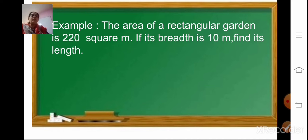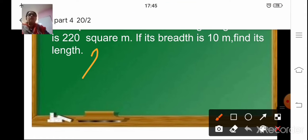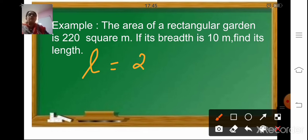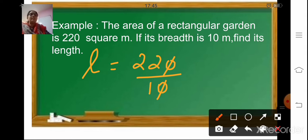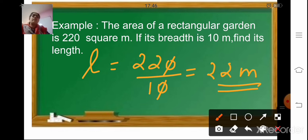Coming to the next example: the area of a rectangular garden is 220 square meter; if its breadth is 10 meter, find its length. Here breadth is given and area is given, so we have to find the length. To find the length we will divide: area 220 upon 10. The zeros cancel, so the length of the rectangular garden is 22 meter.